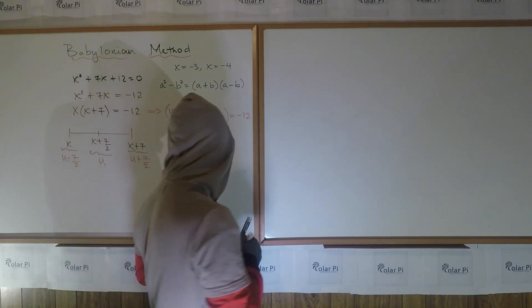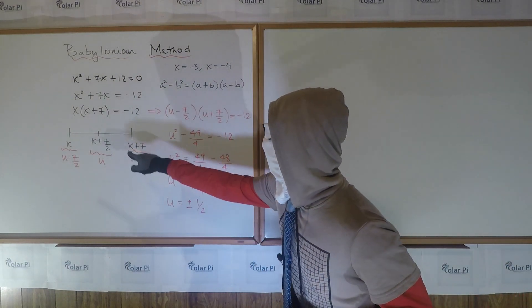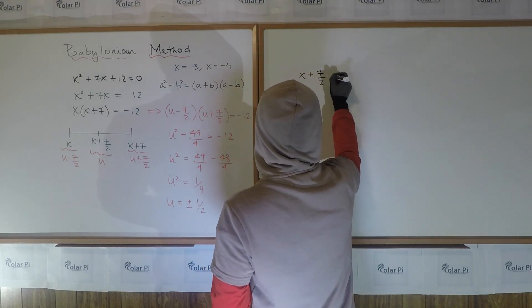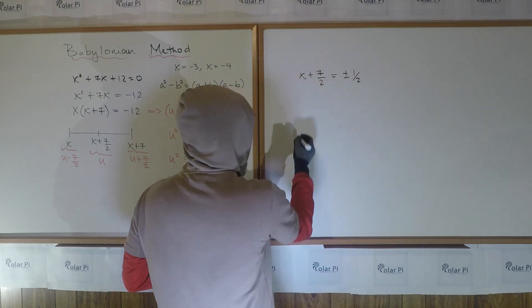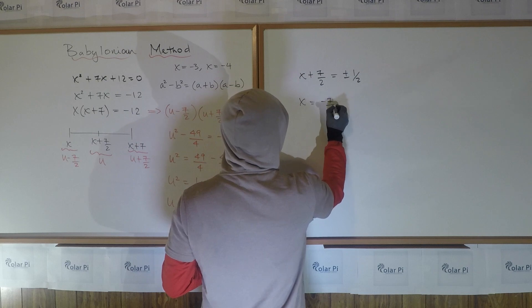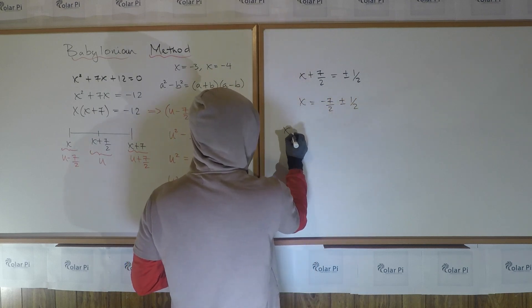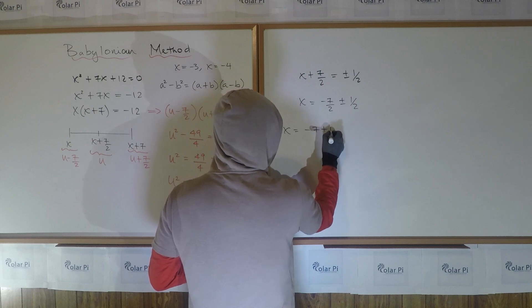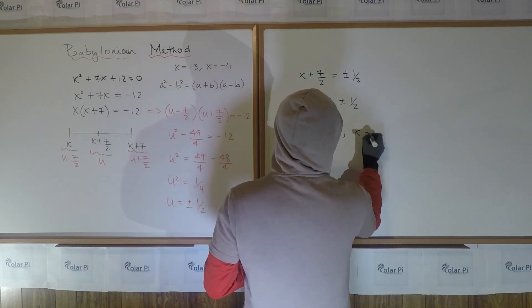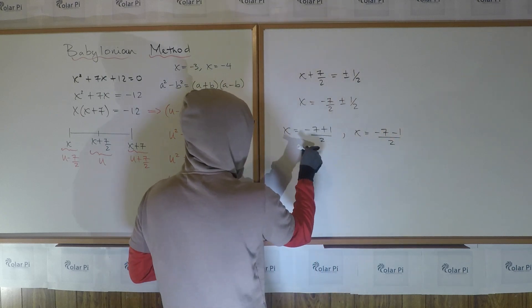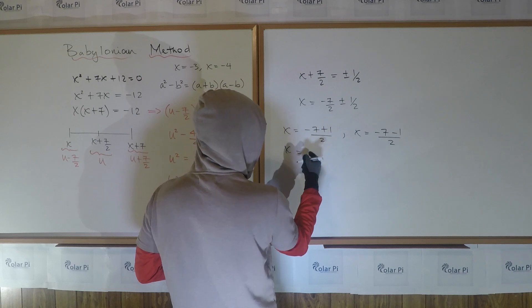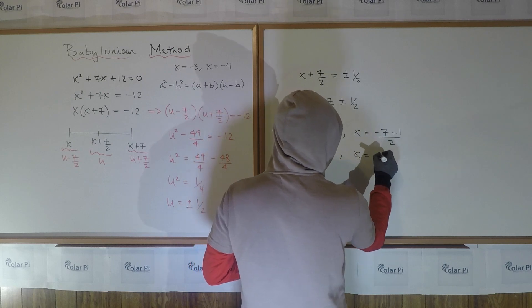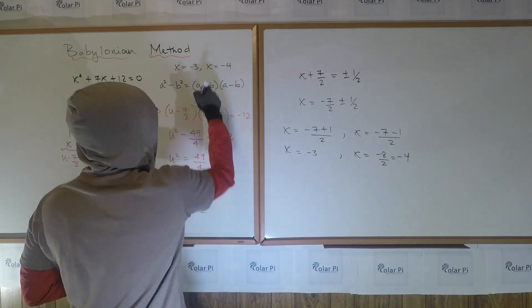So if we recall what we said was u, from this step, we replace u with what we know it is, which is (x + 7)/2. So we go (x + 7)/2 = ±1/2. Got it. And so then x has got to be -7/2 ± 1/2. That is, x = (-7 + 1)/2 and x = (-7 - 1)/2. This here is -6/2, which is -3. And this here is -8/2, which is -4. And that's exactly what we found earlier.